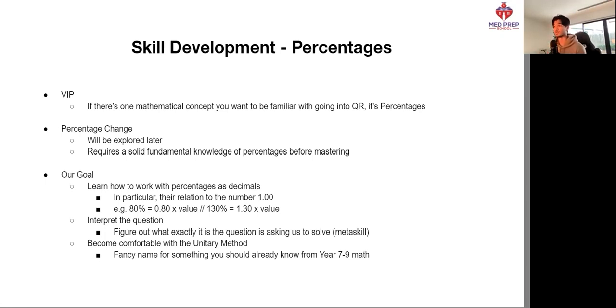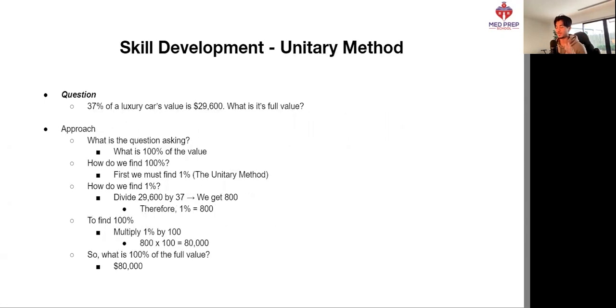Lastly, and more specifically here, we want to become comfortable with the unitary method. Now, some of you may know this, some of you may not. Essentially, it's just a fancy name for something you will already know from year seven and nine math. So here's a question to put it into perspective. 37% of a luxury car's value is 29,600. What is its full value?